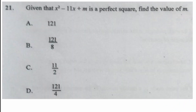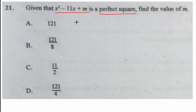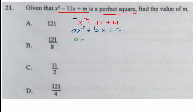Question 21 says that given x squared minus 11x plus m is a perfect square, find the value of m. Comparing this with the standard form ax squared plus bx plus c: a equals 1 (since the coefficient of x squared standing alone is 1), b equals negative 11, and c equals m.